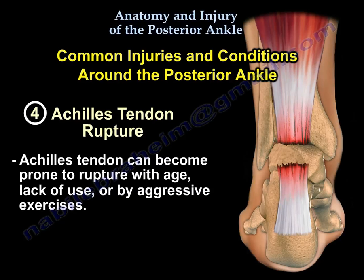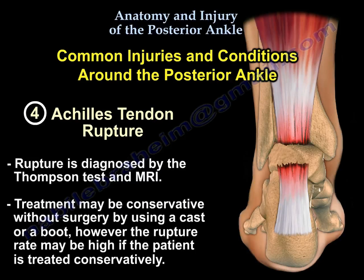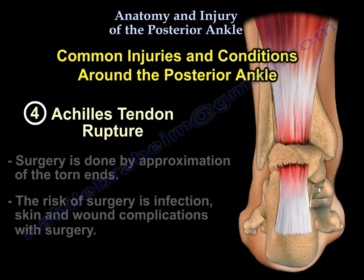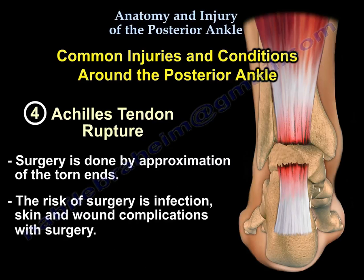The last posterior ankle condition is Achilles tendon rupture. The Achilles tendon can become prone to rupture with age, lack of use, or aggressive exercise. It is diagnosed by the Thompson test and by MRI. Treatment may be conservative using a cast or boot, though the re-rupture rate may be high. Surgery involves approximation of the torn ends, with risks including infection and skin/wound complications.